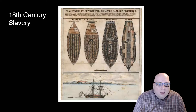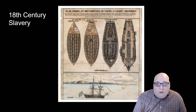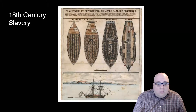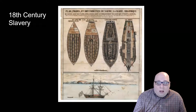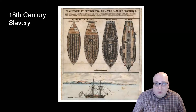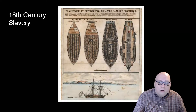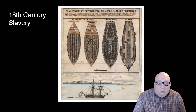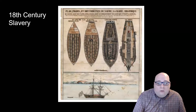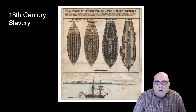One out of every five slaves did not survive the voyage. Captains sometimes threw the sick overboard to prevent the spread of disease — even though those people were still alive, they were thrown into the Atlantic Ocean. Of those who survived, 95% were sent to Brazil and the West Indies, and only 5% went to North America.